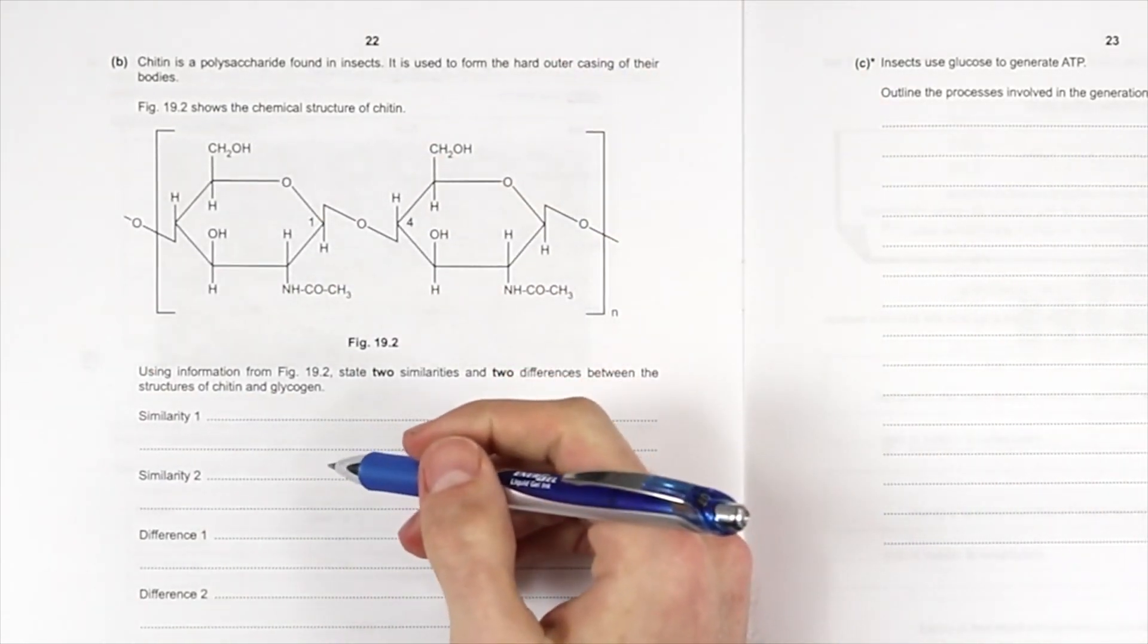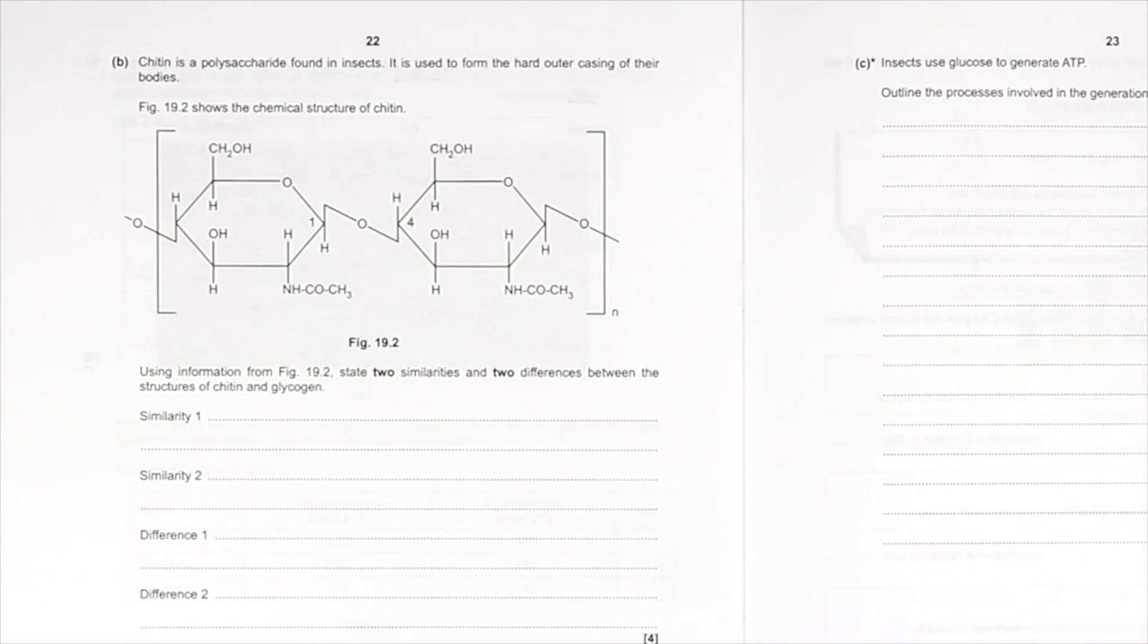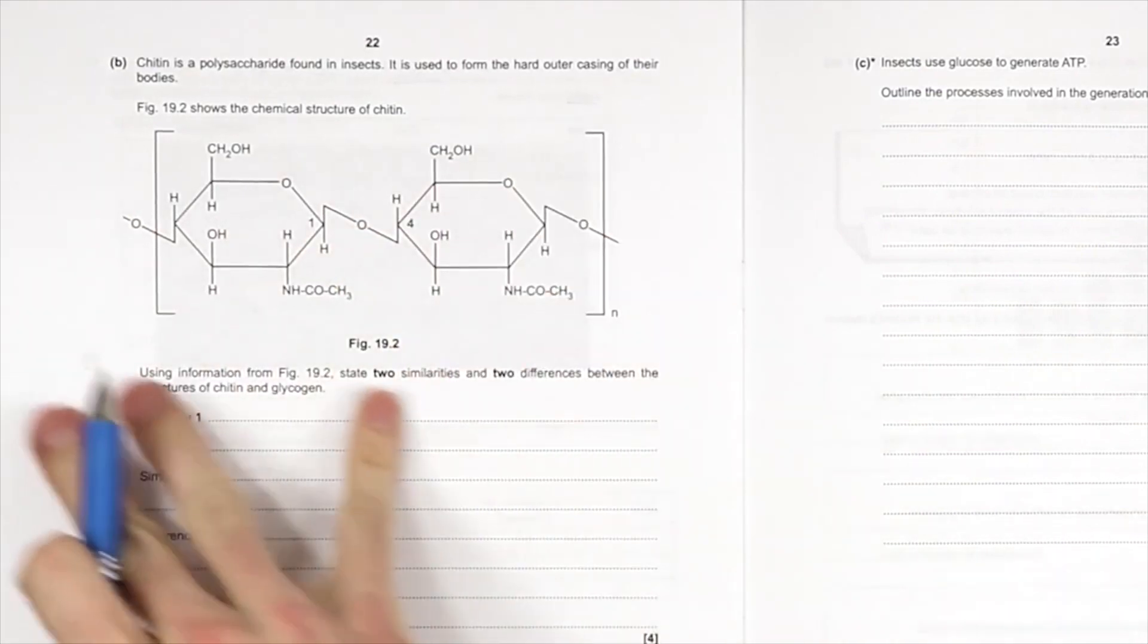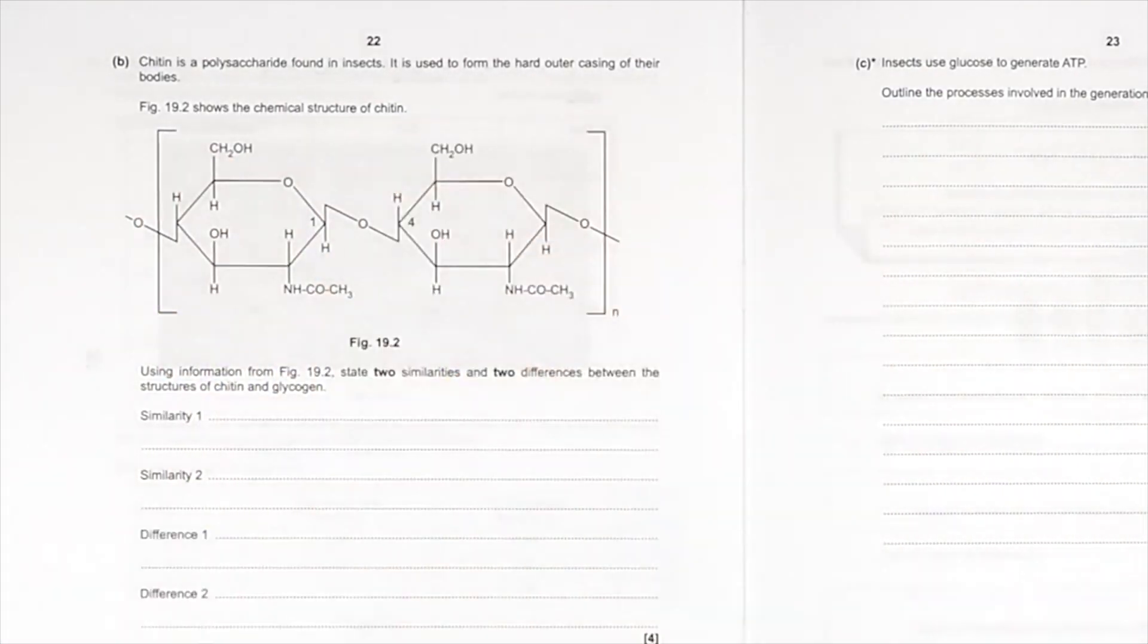Chitin is a polysaccharide found in insects. It is used to form the hard outer casing of their bodies. It's given to you. You're not required to know what it is, but what is it similar to?